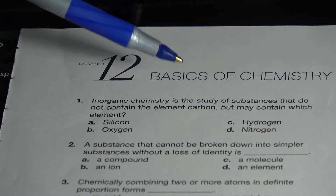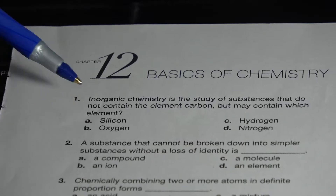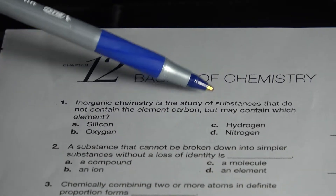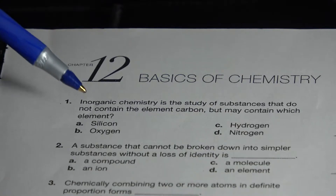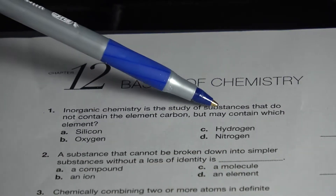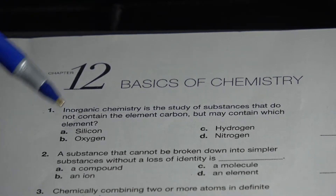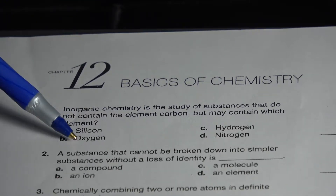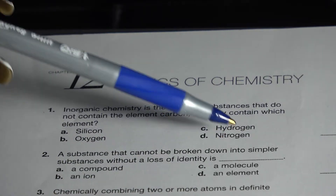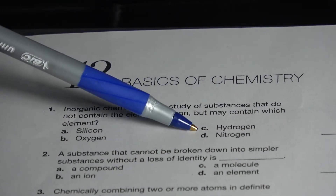Chapter 12: Basics of Chemistry. Number 1: Inorganic chemistry is the study of substances that do not contain the element carbon, but may contain which elements? A. Silicon B. Oxygen C. Hydrogen D. Nitrogen. Answer is C. Hydrogen.